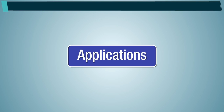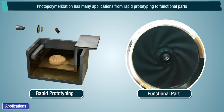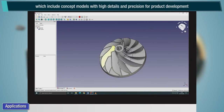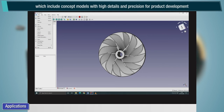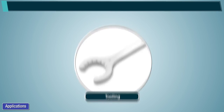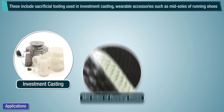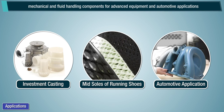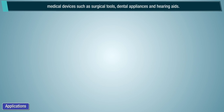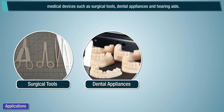Photopolymerization has many applications from rapid prototyping to functional parts, which include concept models with high details and precision for product development, tooling used in short-run production and end-use manufacturing, sacrificial tooling used in investment casting, wearable accessories such as midsoles of running shoes, mechanical and fluid handling components for advanced equipment and automotive applications, and medical devices such as surgical tools, dental appliances, and hearing aids.